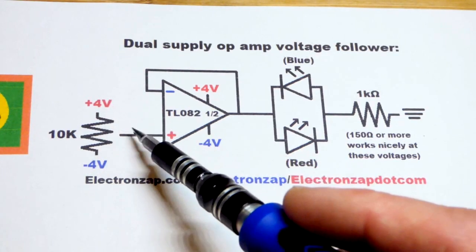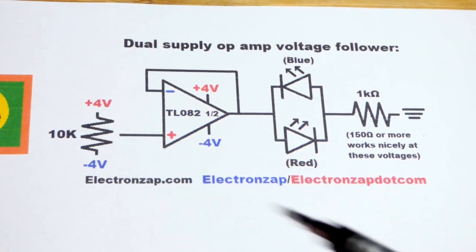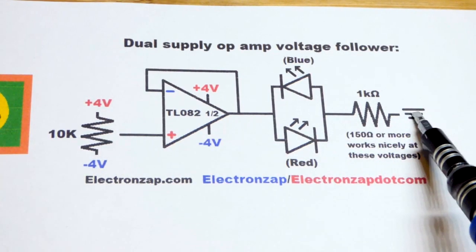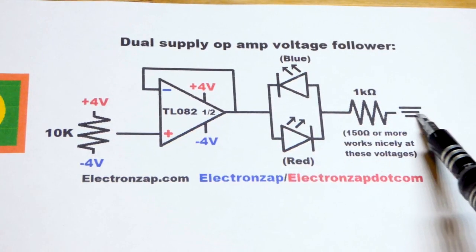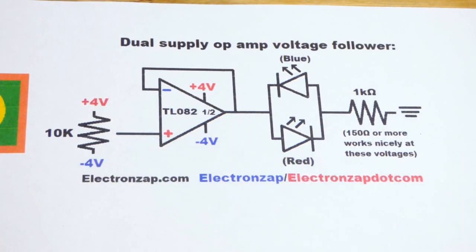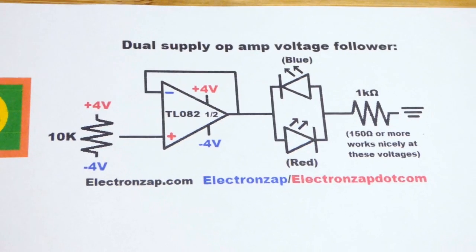10k to the positive side and 10k to the negative side of the power supply, an 8 volt power supply. And so we got half the voltage, we got 4 volts there. But we could also think of that as zero volts with 4 volts more positive and zero volts with 4 volts negative. So let's split the supply. In any case, that's a voltage follower.